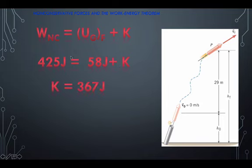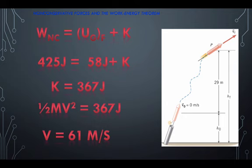Then we can find the kinetic energy by subtracting that from the work that is done by the engine. Then we set that kinetic energy equal to 1 half mv squared, solve for our velocity, and we get 61 meters per second.